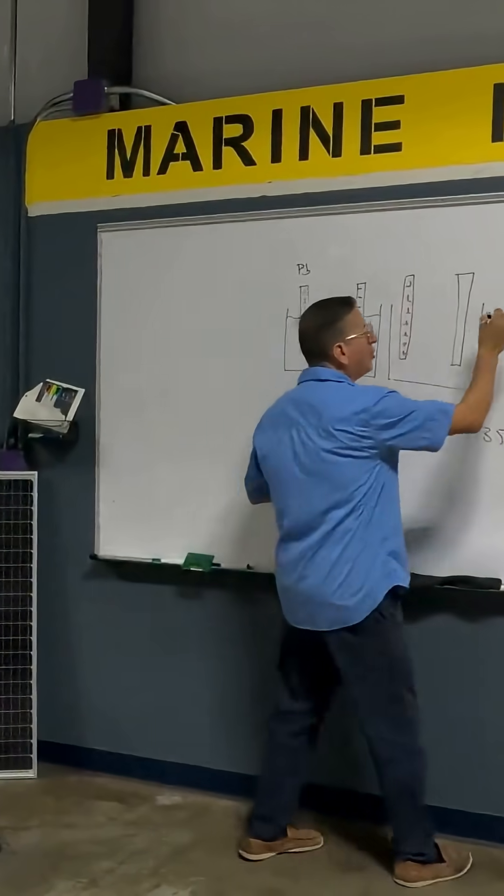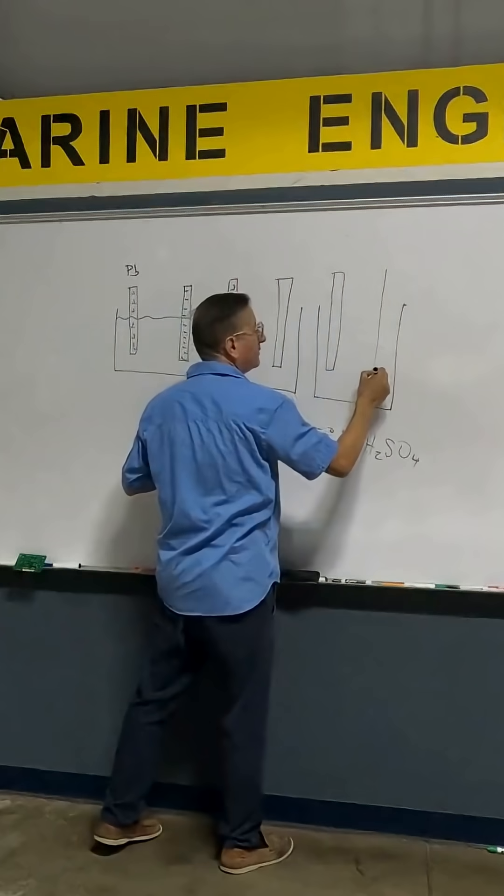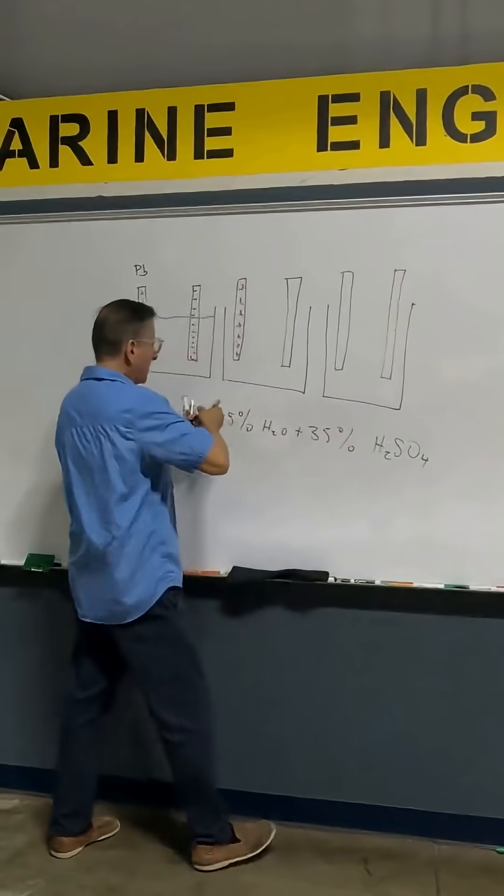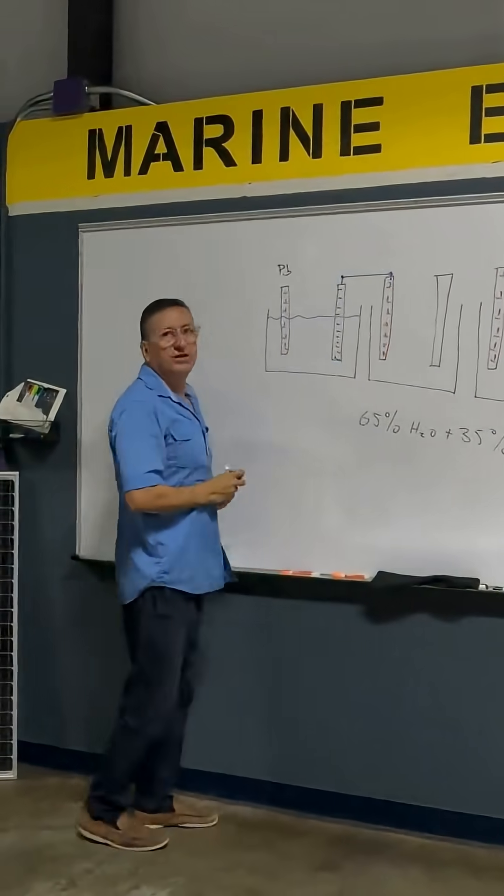And what about if I connect another cell in series with this? Once again, the connection is similar. I am going to connect the negative of this with the positive of this. And now the negative of this with the positive of the other one.